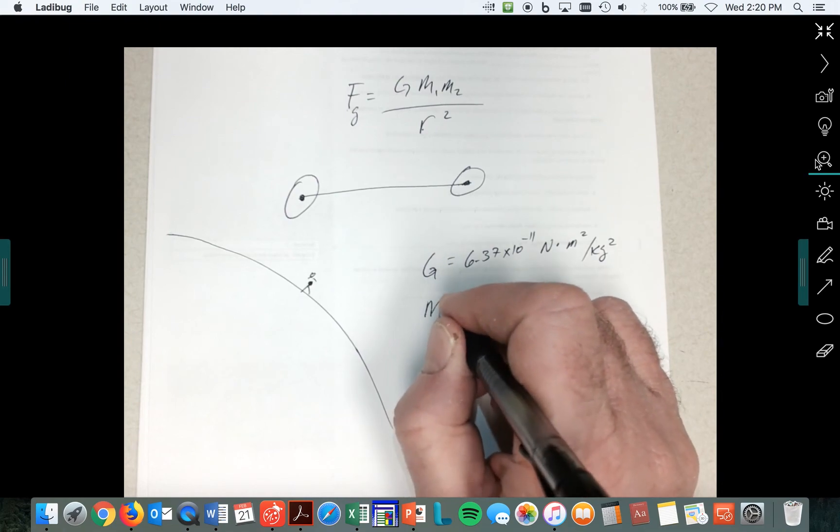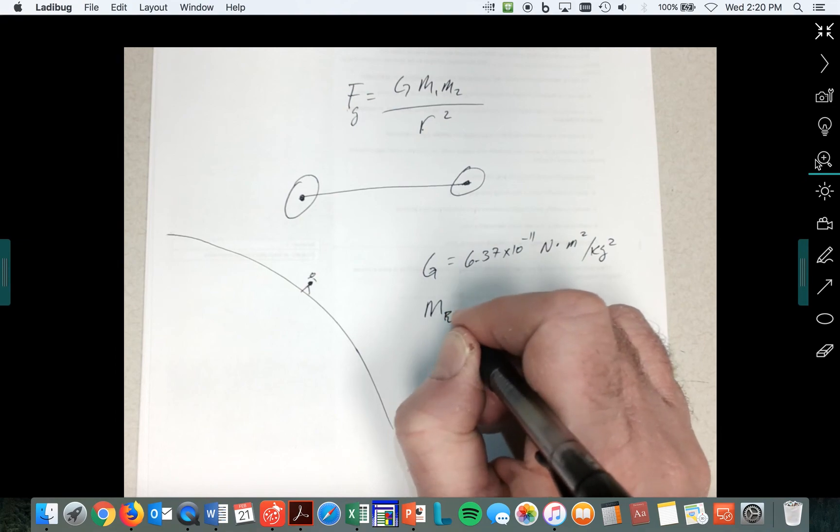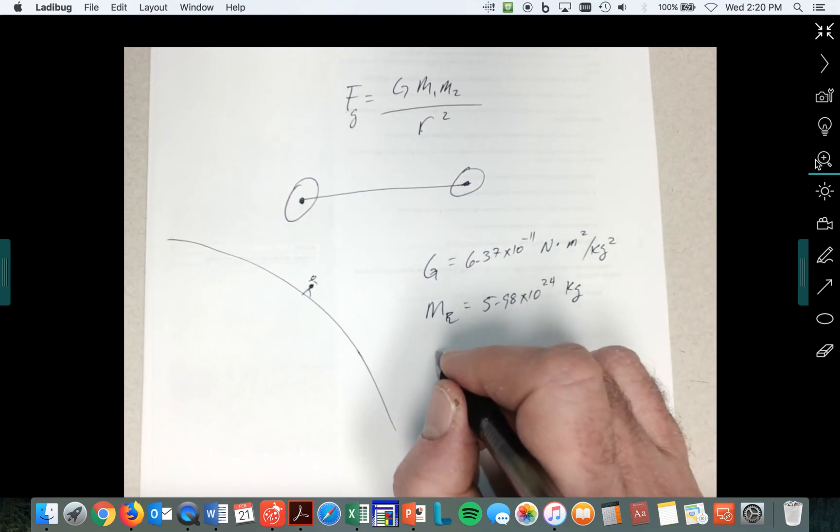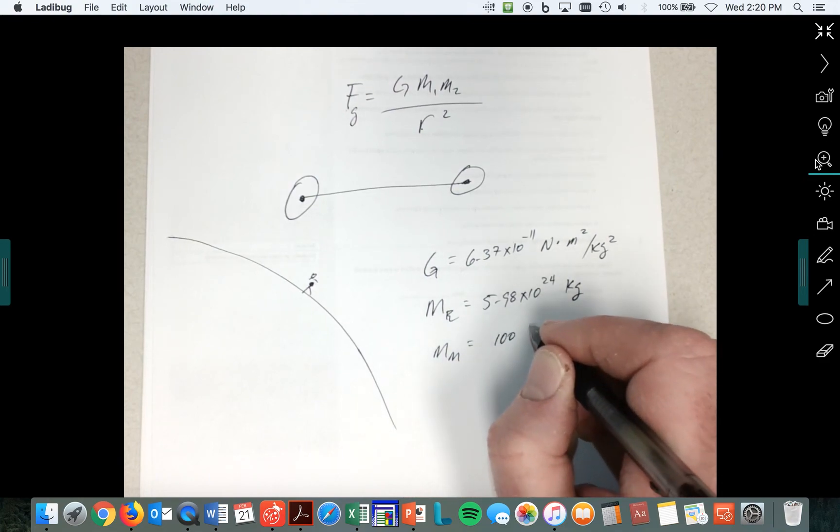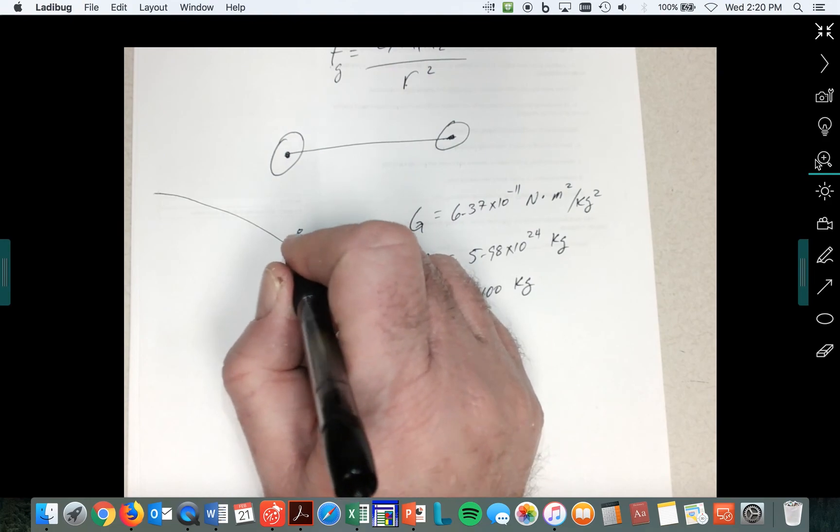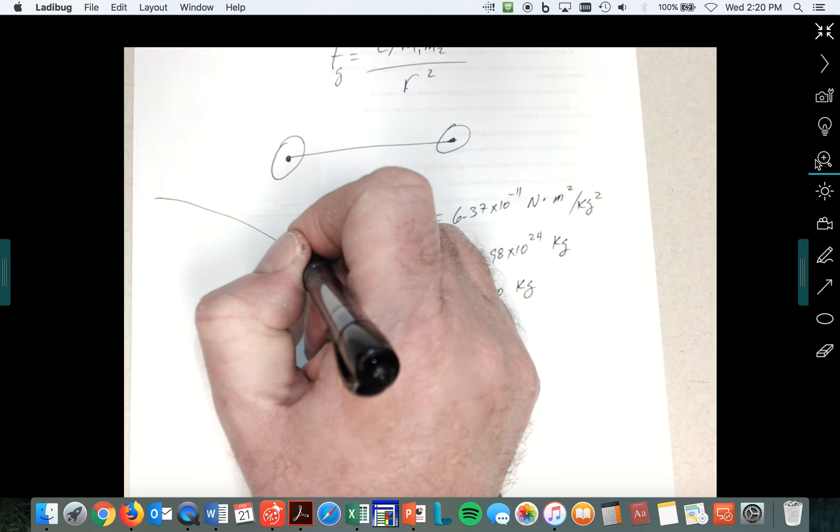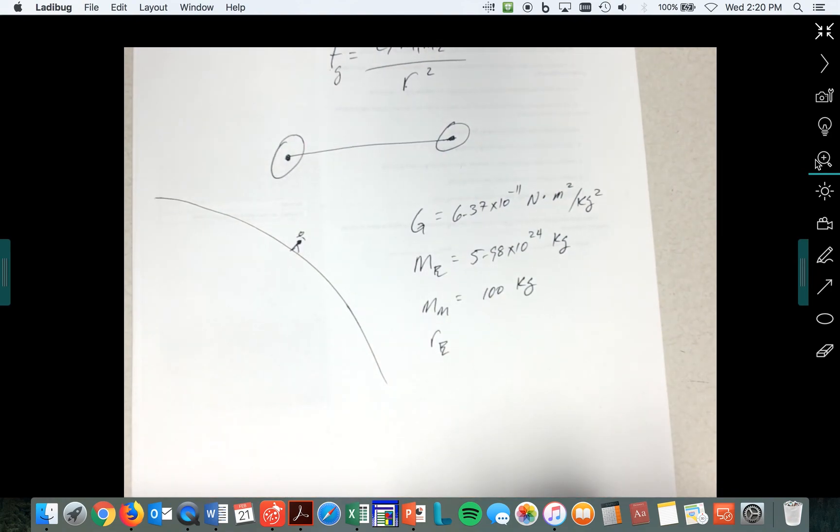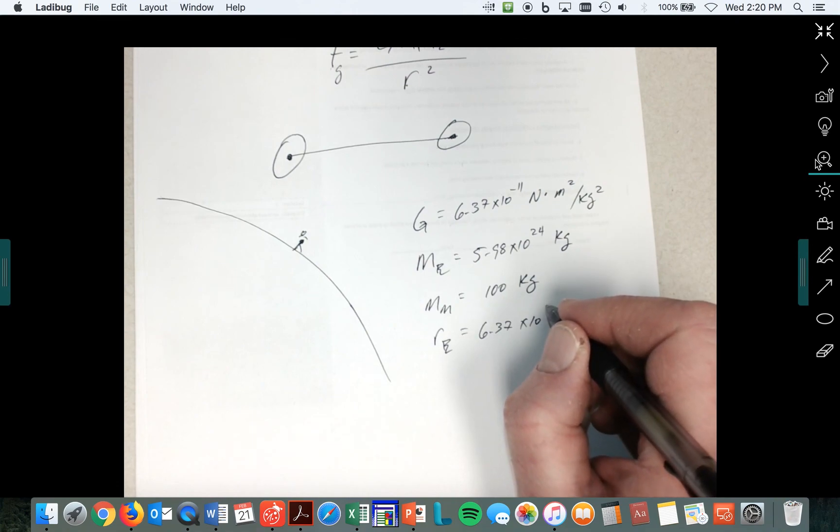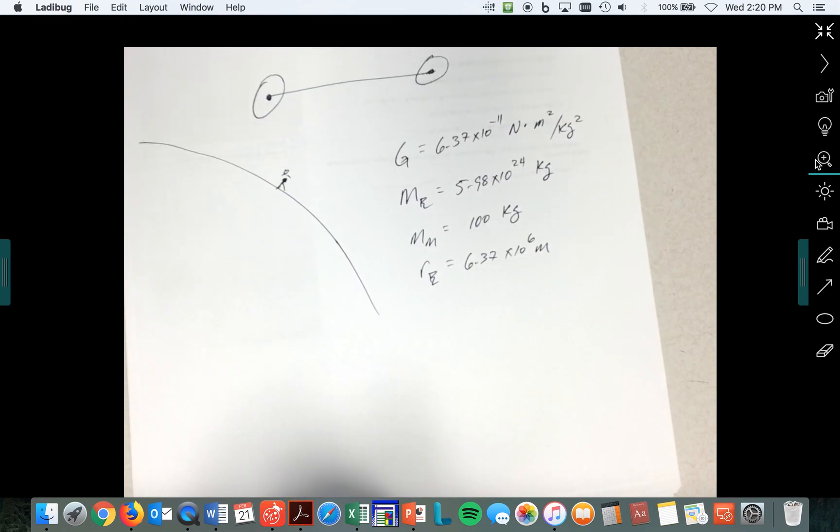And let's say the mass of the earth is equal to 5.98 times 10 to the 24 kilograms. Let's say the mass of this person, mass of the man is a hundred kilograms. Let's make it easy. And let's say the radius of the earth, because between this and our mass, those like two and a half feet or three feet between here and there is no big deal when you talk about this radius, which is 6.37 times 10 to the sixth meters. Well, let's figure that out. I'm going to check these numbers and we'll come back.